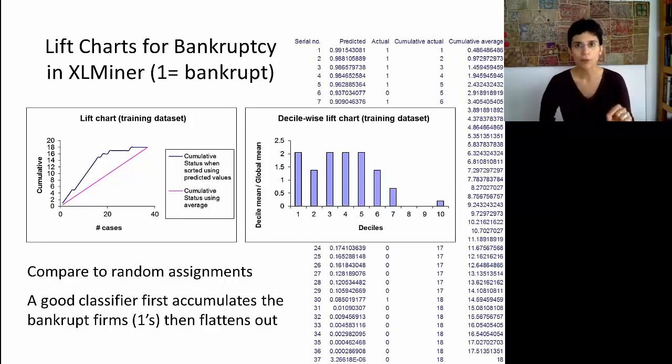Now what's an ideal classifier? In this case, we had 21 firms that went bankrupt. So the ideal classifier would allocate the highest probabilities to the 21 bankrupt firms, and then the lower probabilities to all the other firms. The next step is actually moving into accumulating these numbers, the ones and the zeros. The ideal classifier will start accumulating ones, one after the other, and then when it reaches 21, it will flatten out, because you're only adding zeros. So if you think about this chart, as we add more cases, the cumulative number of ones or zeros is going to go straight up until 21, and then flatten out.